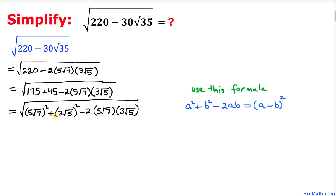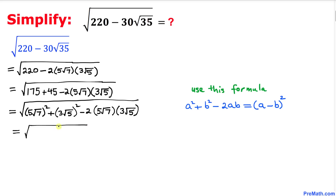Now we can see that this represents a perfect square. If I call 5 times square root of 7 as 'a' and 3 times square root of 5 as 'b', then we can use the well-known formula: a squared plus b squared minus 2ab equals (a minus b) squared. So therefore I can write this whole thing as the square root of (5 times square root of 7 minus 3 times square root of 5) squared.